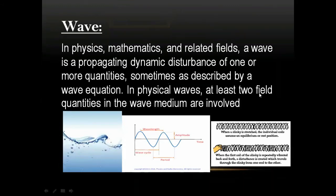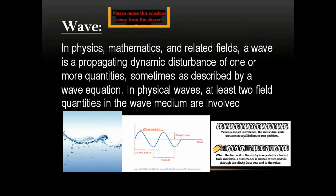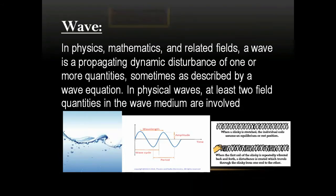Waves travel in the form of repeated motion of particles about their mean position. If we throw a stone in a pond, circular ripples form on the water's surface, and the snake-like motion of a rope are examples of wave motion — a disturbance traveling from one point to another.